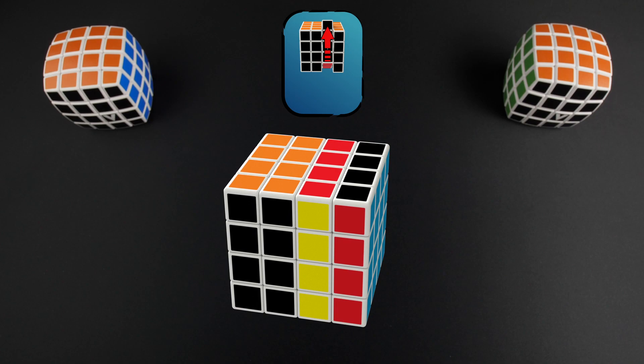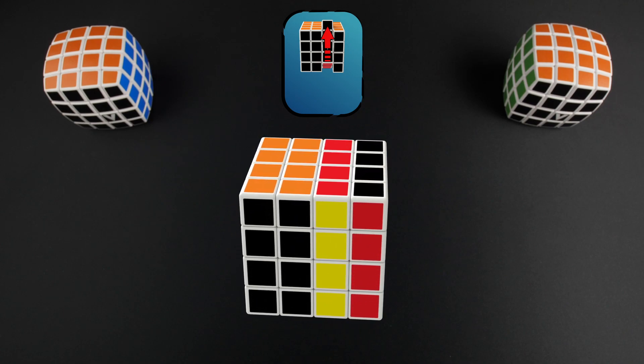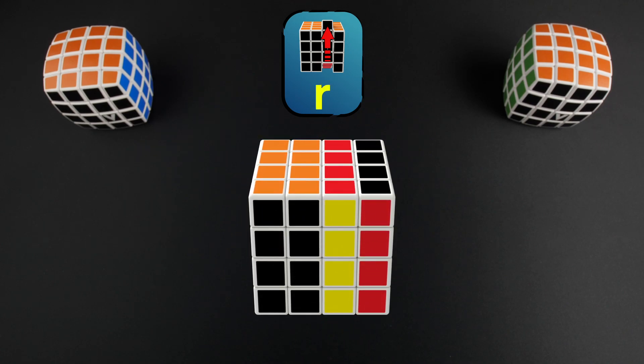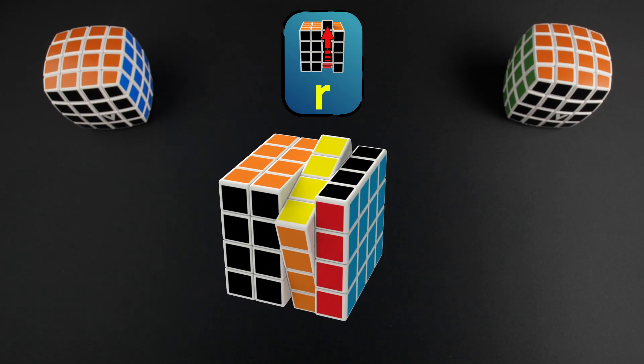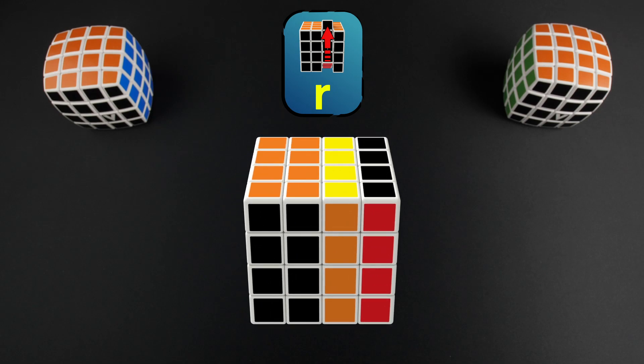Finally, to move an inner layer without moving the outer layer, we use a lowercase letter. For example, lowercase r would instruct us to turn the inner right layer clockwise. Let's now move on to the solution.